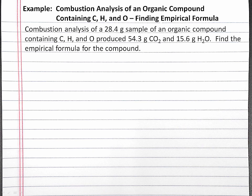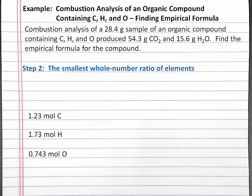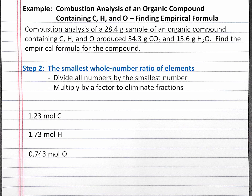Now we have the molar ratio of carbon, hydrogen, and oxygen in our sample, and we just need to convert this molar ratio into the smallest whole number ratio of elements in our compound, which is the empirical formula. In the strategy we'll use, we'll first divide all of our numbers by the smallest number so that all of our numbers are 1 or greater. Then, if there are any fractions in our molar ratio, we'll multiply by a factor to eliminate those fractions. Anything we do to one number, we do to all of our numbers to maintain our current ratio.